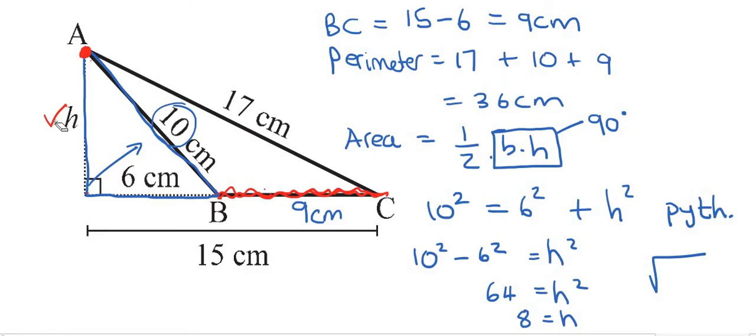So now we can work out the area of our triangle because we know that it's half base times height. And we already said that the base length is 9 and the height is 8. And that's going to give us 36 centimeters to the power of 2.